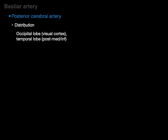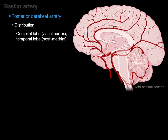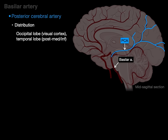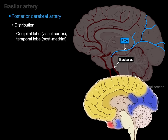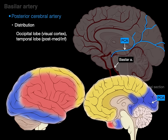The posterior cerebral artery's distribution includes the occipital lobe — our primary visual cortex — and the posterior medial and inferior portions of the temporal lobe. In a mid-sagittal section, the posterior cerebral artery in blue supplies the occipital lobe and the posterior medial surface of the temporal lobe. In the lateral view, it also supplies the occipital lobe and the inferior portion of the temporal lobe.